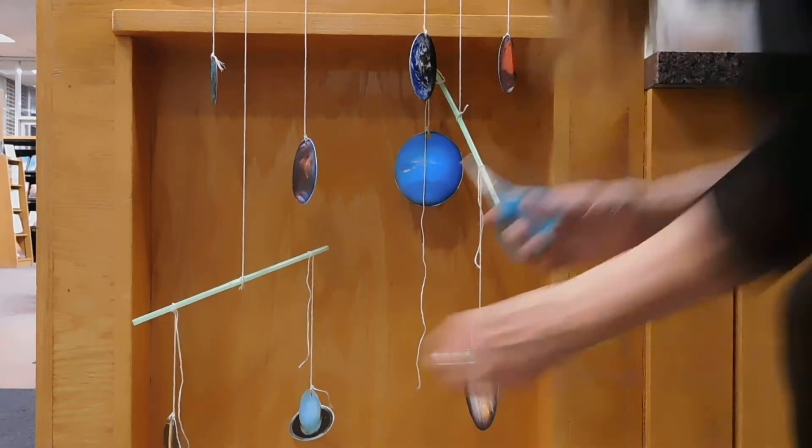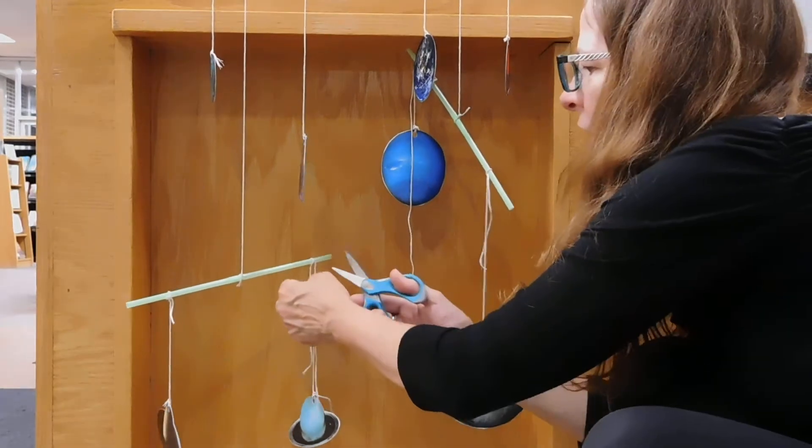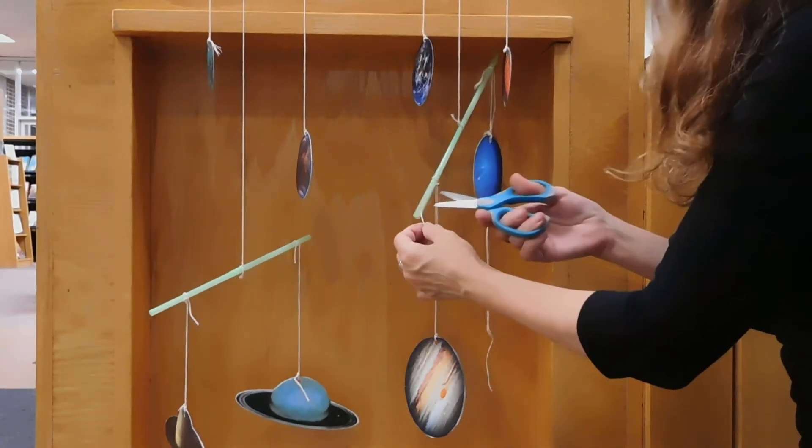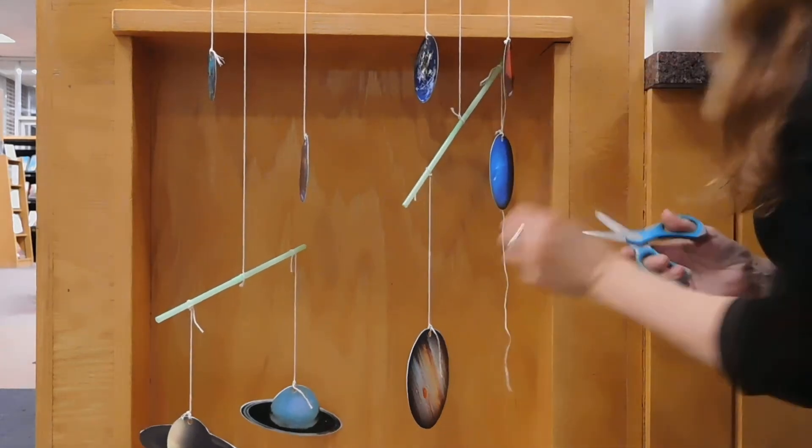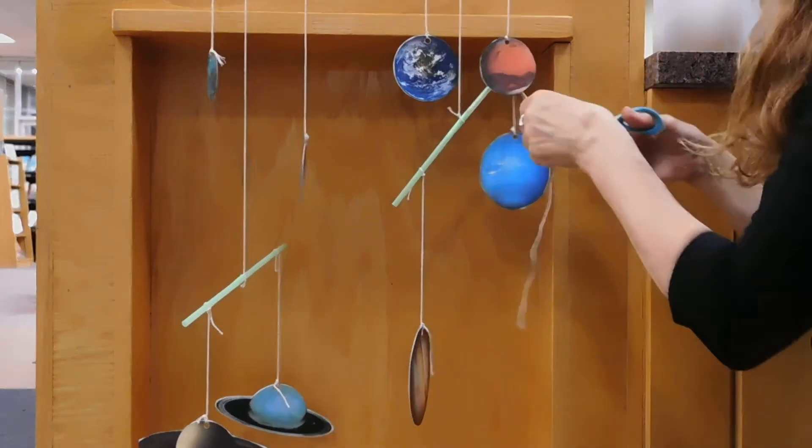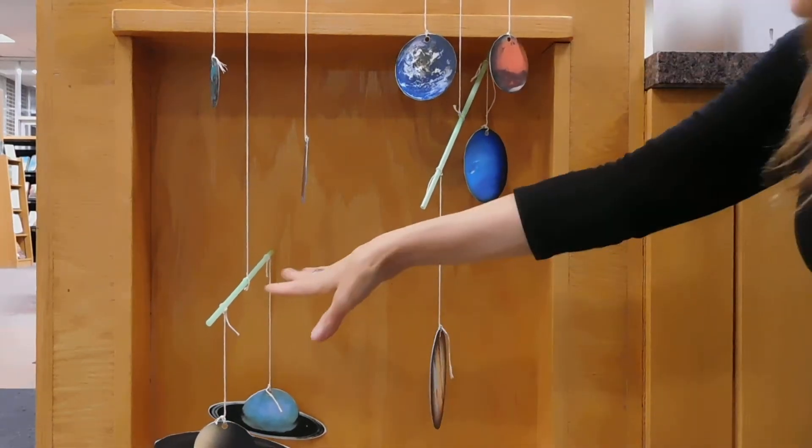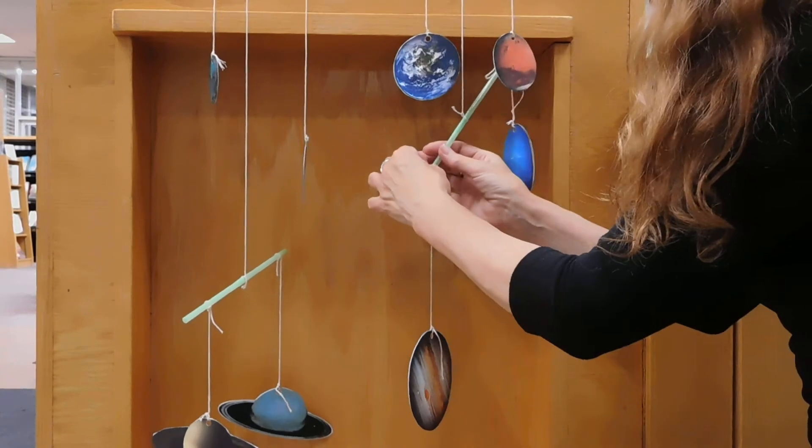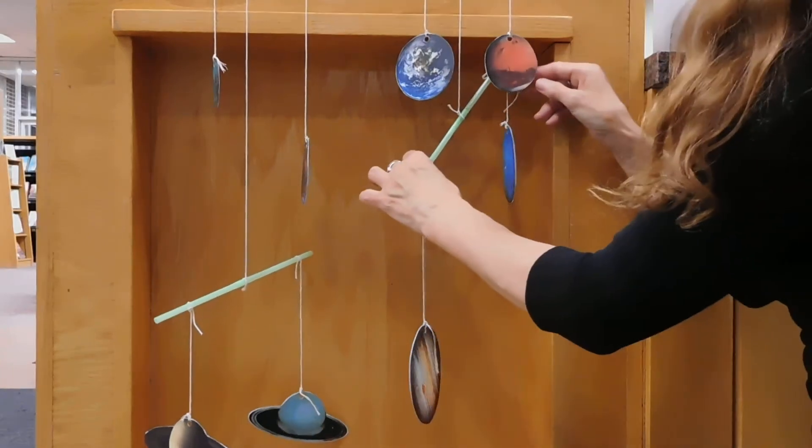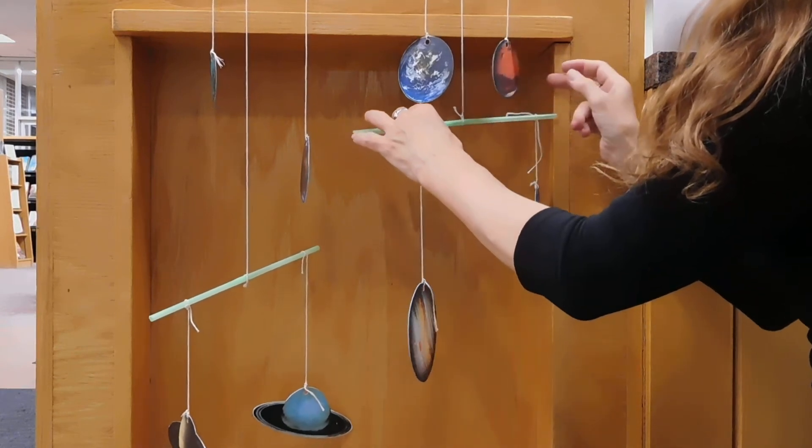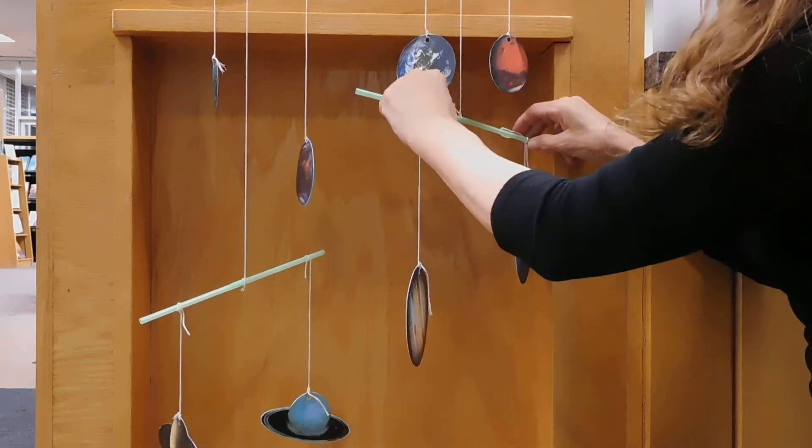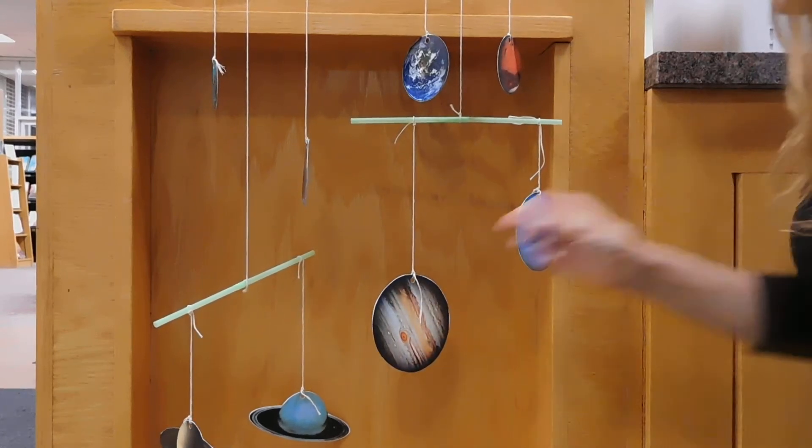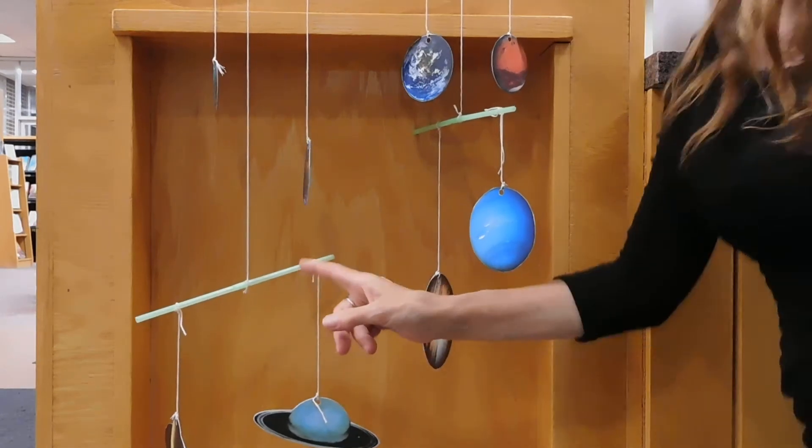So I grab the scissors. At this point, I'm going to cut off some of that extra string. And I'm going to be careful that I don't cut the string that the planets are attached with. So as we can see on this, this side is pretty close. This side is still way off. So that Jupiter is really much larger than Neptune. So I'm going to move Jupiter back that way a little. And even that little change has helped immensely. So now I'm going to work on getting that side more in balance.